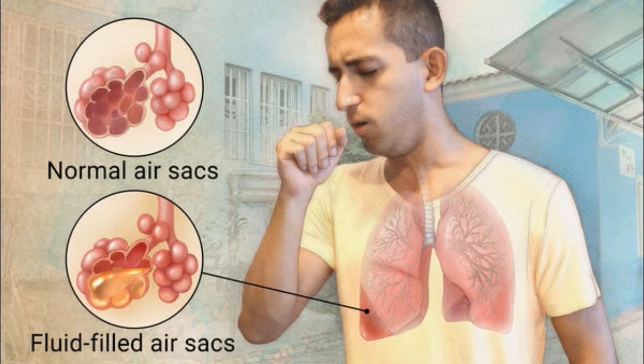Treatment: Pneumonia should be treated with antibiotics. The antibiotic of choice is amoxicillin dispersible tablets. Most cases of pneumonia require oral antibiotics, which are often prescribed at a health center. These cases can also be diagnosed and treated with inexpensive oral antibiotics at the community level by trained community health workers. Hospitalization is recommended only for severe cases of pneumonia.